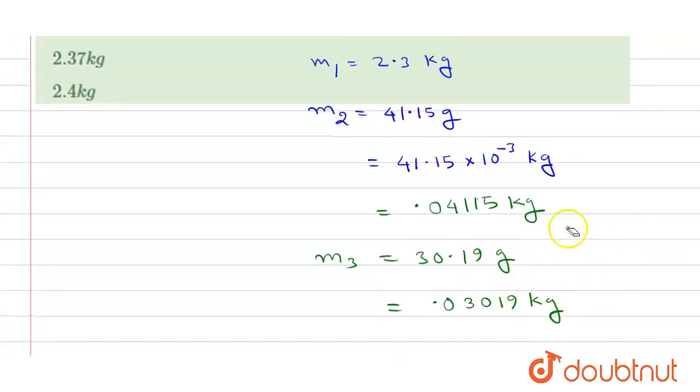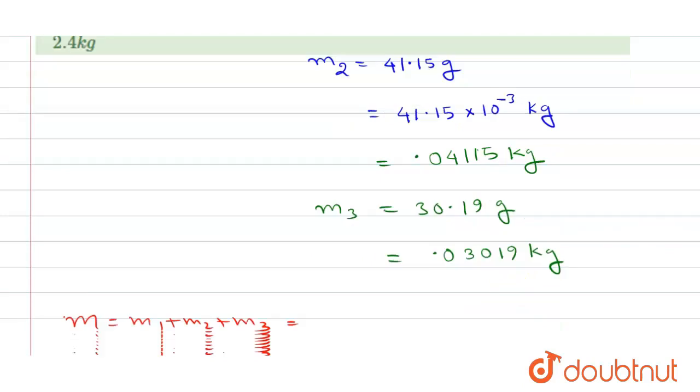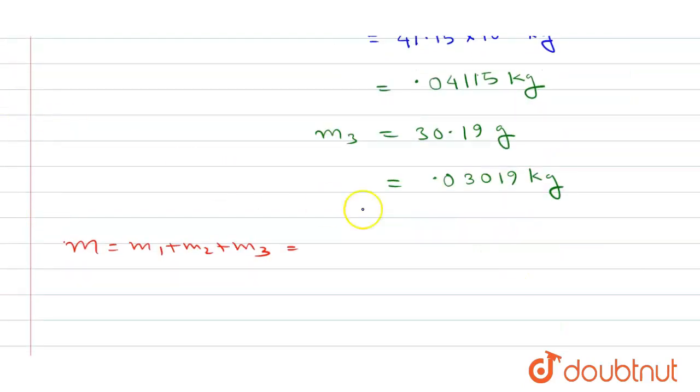Now it will be 4, 1, then it will be 3, 0 plus 1 will be 1, and 3 plus 4 will be 7. This gives us 2.37134.